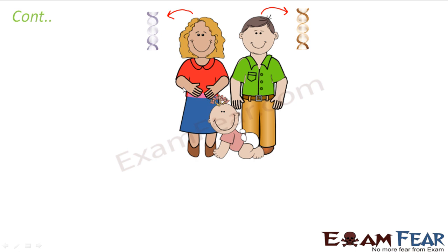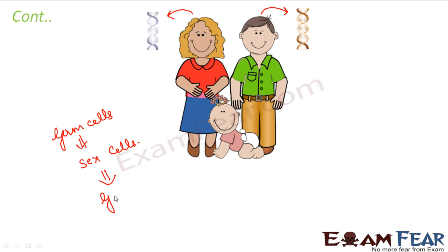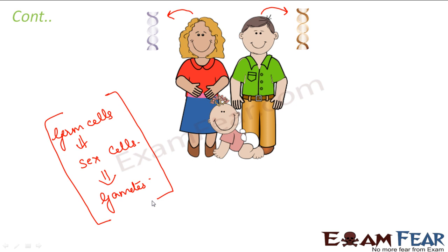This process of reproduction starts with those specialized cells. These specialized cells are called germ cells, also known as sex cells, also known as gametes. These are different names for those specialized cells. They are the specialized cells in our body which have half the amount of DNA, so that when they combine with the other specialized cell, the amount of DNA becomes the same as that present in all other cells of the body.